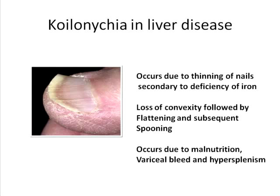Koilonychia, or spoon-shaped nails, occurs due to thinning of nails secondary to iron deficiency. The nail normally has convexity when seen from the superior aspect. In iron deficiency, this convexity is first lost, then the nail becomes flat, and subsequently it gets spooned, as shown in the diagram.